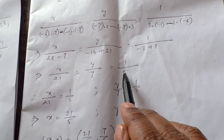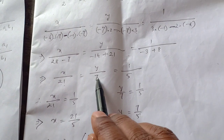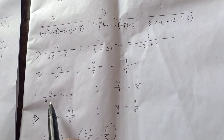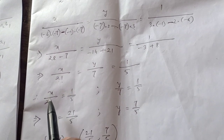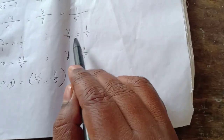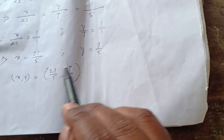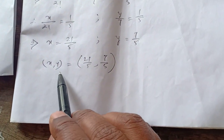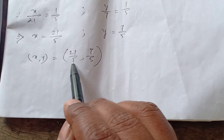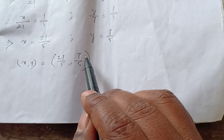Then equate the first fraction with the last fraction, and the second fraction with the last fraction. Cross multiplying: 21 into 1 gives X equal to 21 by 5. And 7 into 1 gives Y equal to 7 by 5. So the required solution is X comma Y equal to 21 by 5 comma 7 by 5.